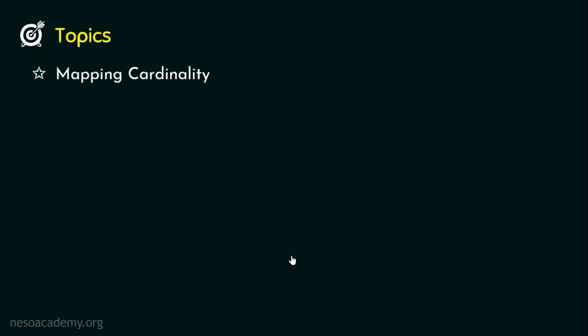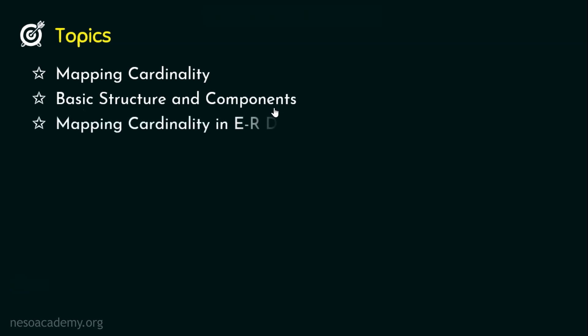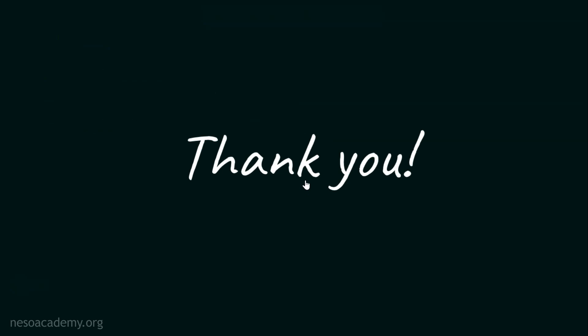In this presentation we revisited mapping cardinality, understood the basic structure and components of the ER diagram, and understood the mapping cardinality representation in ER diagram. Though mapping cardinality has advantages like simplifying complex design, it has one main disadvantage: no specific number can be set as the maximum. The alternative for this is participation constraints, which we are going to see in the next presentation. I hope the session was informative — thank you for watching.